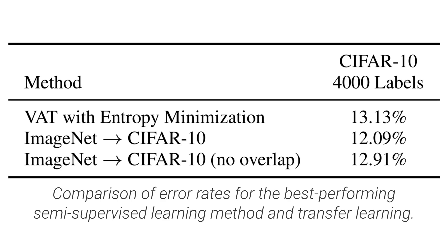Another baseline to compare semi-supervised learning against is transfer learning, which can obtain good performance on small-label datasets by pre-training a model on a large related dataset. We found that basic transfer learning from ImageNet to CIFAR-10 outperformed the best semi-supervised learning method we studied, even when we removed the classes from ImageNet which were similar to CIFAR-10 classes.